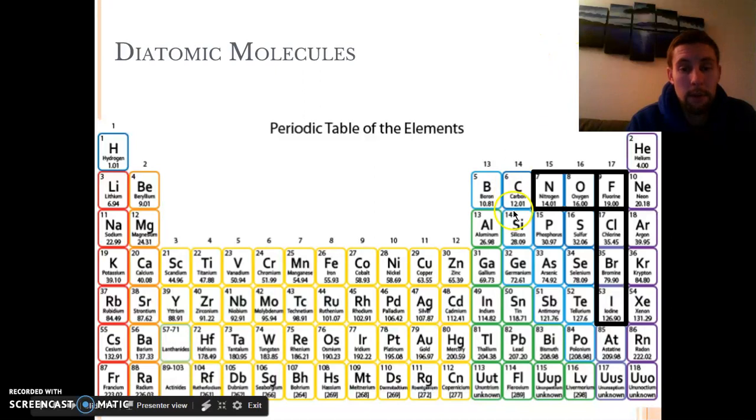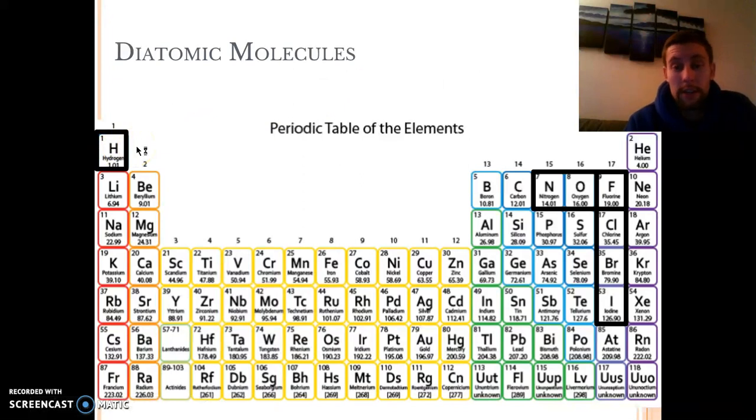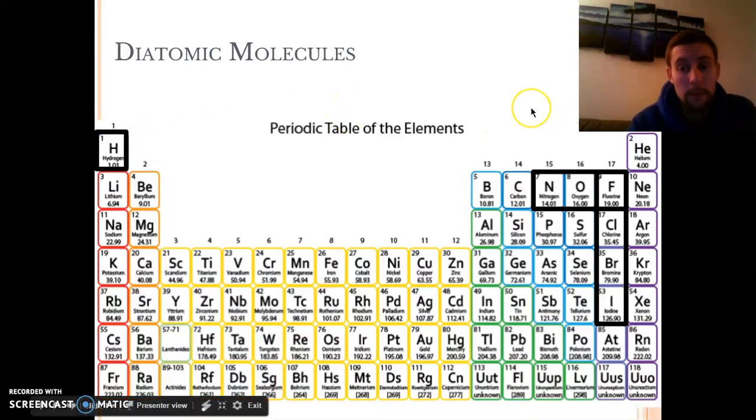The way to remember these is pretty simple. Those diatomic seven make the shape of a seven on the periodic table, starting with element number seven, nitrogen. But if you count these out, how many elements do we have? One, two, three, four, five, six. Wait, I thought you said there were seven. We're missing one. This little guy up here, hydrogen is one exception. You can't forget little number one, hydrogen, is also diatomic. You're going to need to know these, make sure you do.